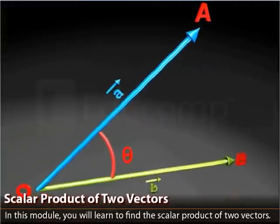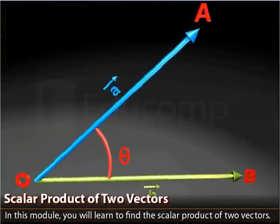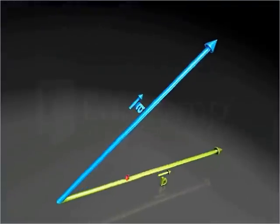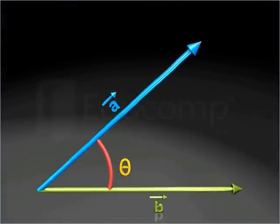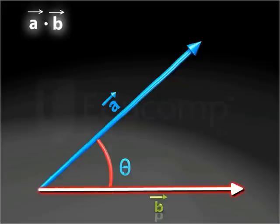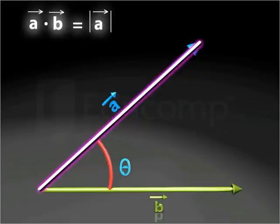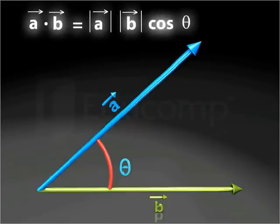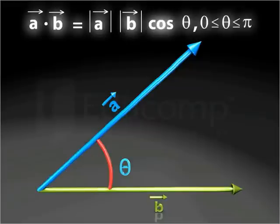Scalar Product of Two Vectors. In this module, you will learn to find the scalar product of two vectors. The scalar product of non-zero vectors A and B is defined as the product of magnitudes of vector A, vector B, and the cosine of the smaller angle between them. The dot symbol is the operation symbol for the scalar product.